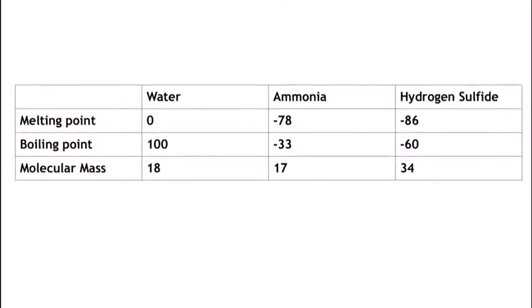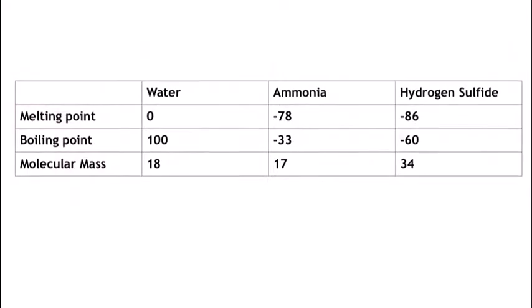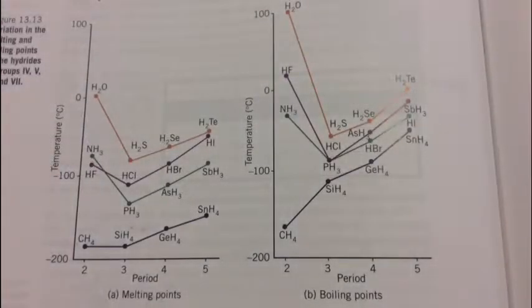These are the melting and boiling points of water, ammonia and hydrogen sulfide. As you can see, water's melting and boiling point are significantly higher than those of ammonia and hydrogen sulfide.